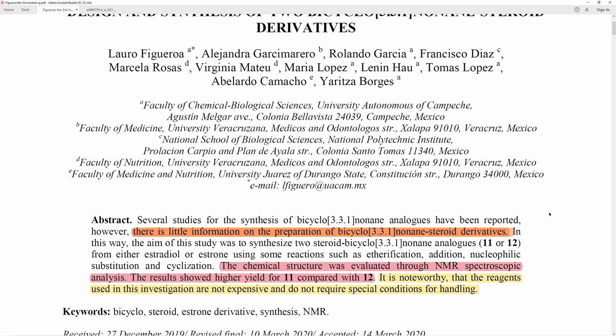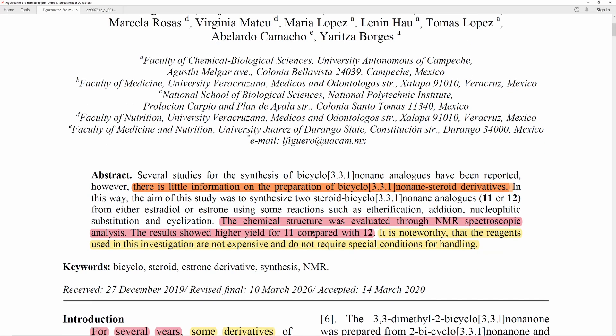Several studies for the synthesis of bicyclo-331-nonane analogs have been reported. However, there is little information on the preparation of bicyclo-331-nonane steroid derivatives. We're going to put a pin in that and come back to that. The chemical structure was evaluated through NMR spectroscopic analysis. The results showed higher yield for 11 compared with 12. That doesn't really tell us anything from the NMR, but whatever, it's just two unrelated statements.